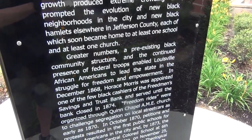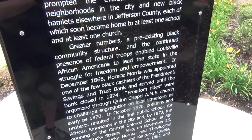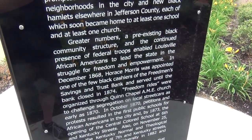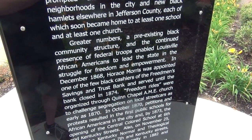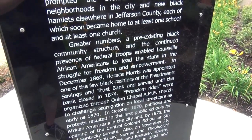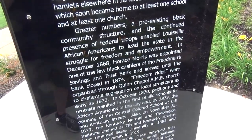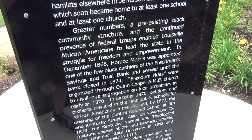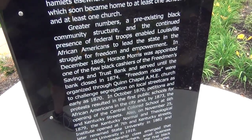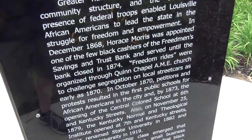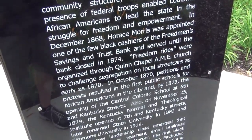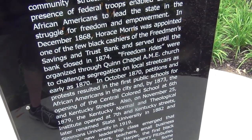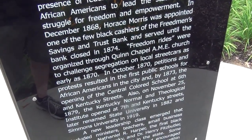Each hamlet soon became home to at least one school and at least one church. Greater numbers, a pre-existing black community structure, and the continued presence of federal troops enabled Louisville African Americans to lead the state in the struggle for freedom and empowerment. In December 1868, Horace Morris was appointed one of the few black cashiers of the Freedmen Savings and Trust Bank and served until the bank closed in 1874.